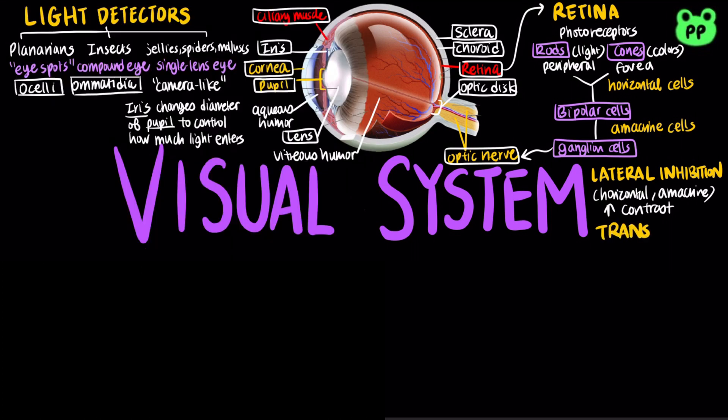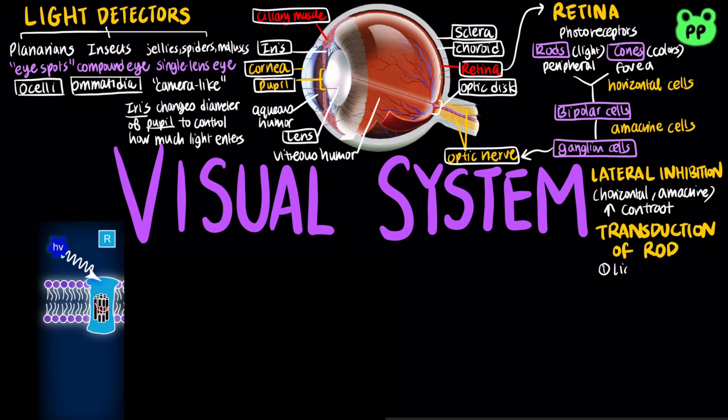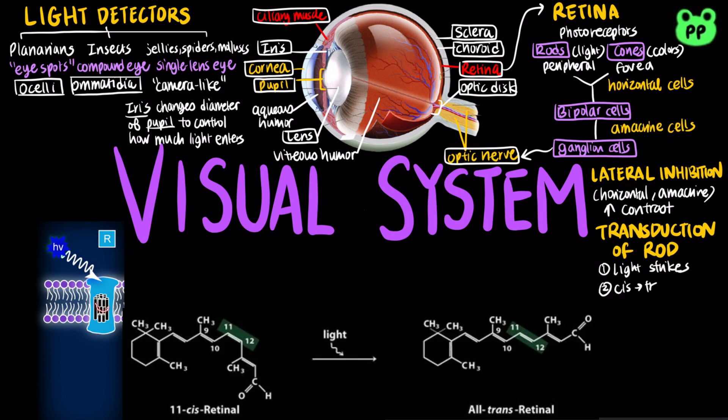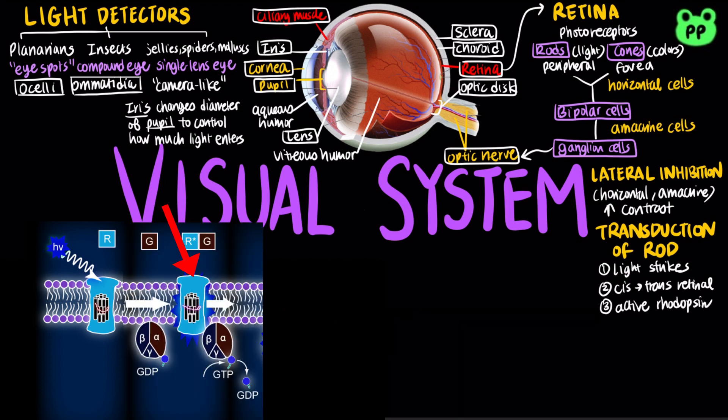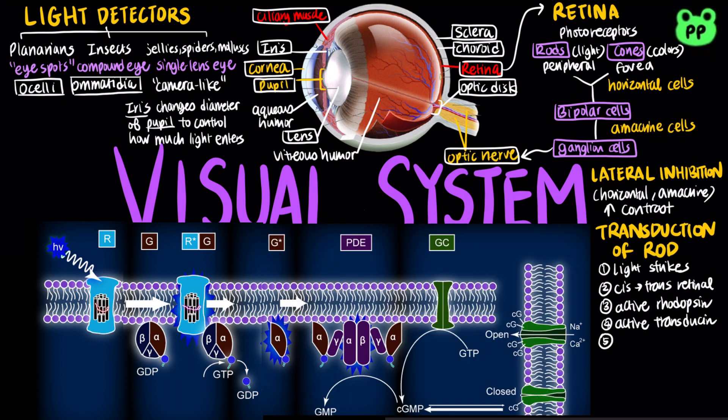Each rod cell contains the pigment rhodopsin, which consists of a light-absorbing molecule called retinol bonded to a protein called opsin. When light strikes the rhodopsin, it converts cis-retinol to trans-retinol, which activates rhodopsin. Active rhodopsin in turn activates G-protein called transducin. Transducin then activates the enzyme phosphodiesterase, which detaches cyclic GMP from sodium channels in the plasma membrane by hydrolyzing cyclic GMP to GMP, leading to the closing of sodium channels and a decrease in the membrane's permeability to sodium ions.